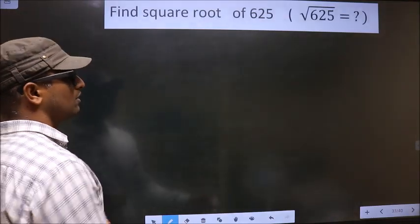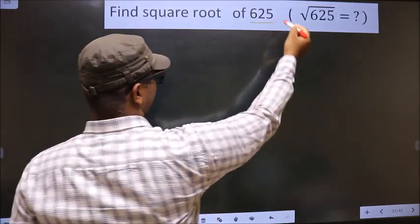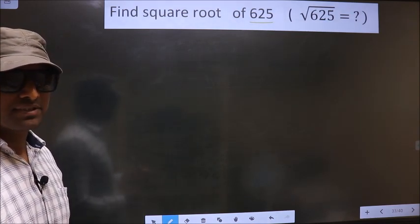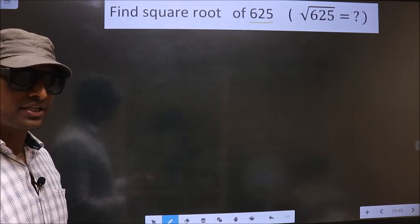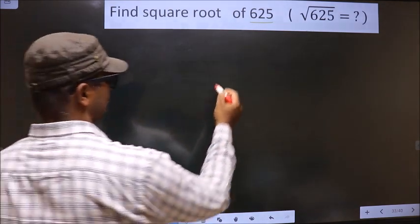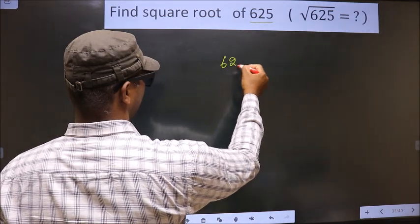Find square root of 625. To find the square root by long division method, first we should frame it in this way. See, that is 625.